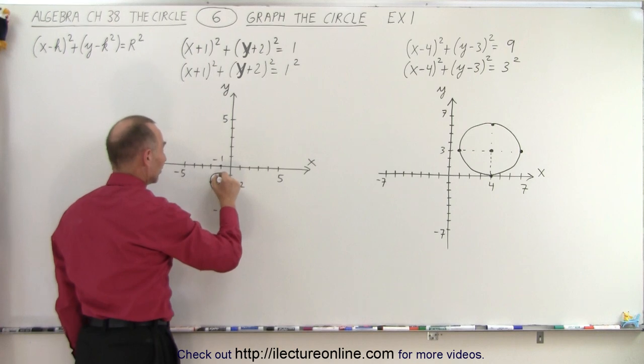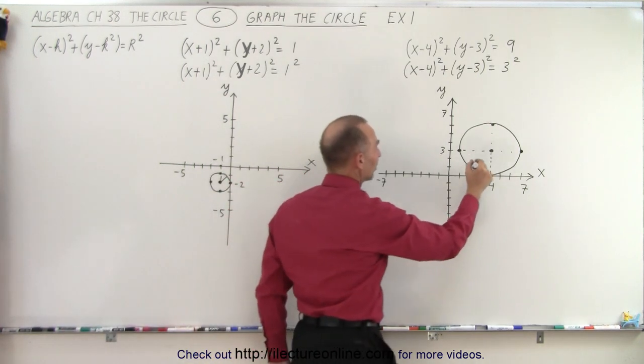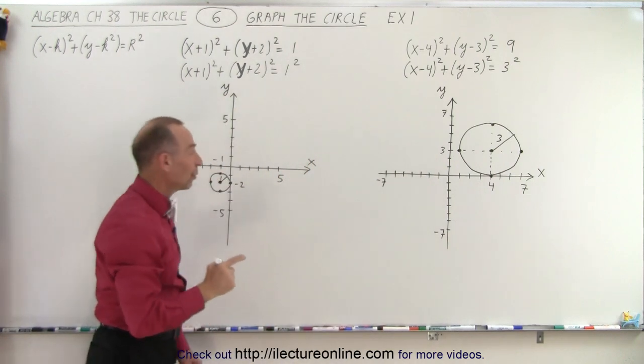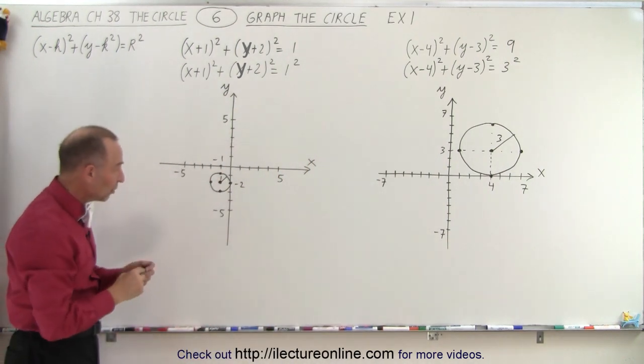So you can see that the radius here is equal to 1 and the radius here is equal to 3. And so that's how we graph those two equations.